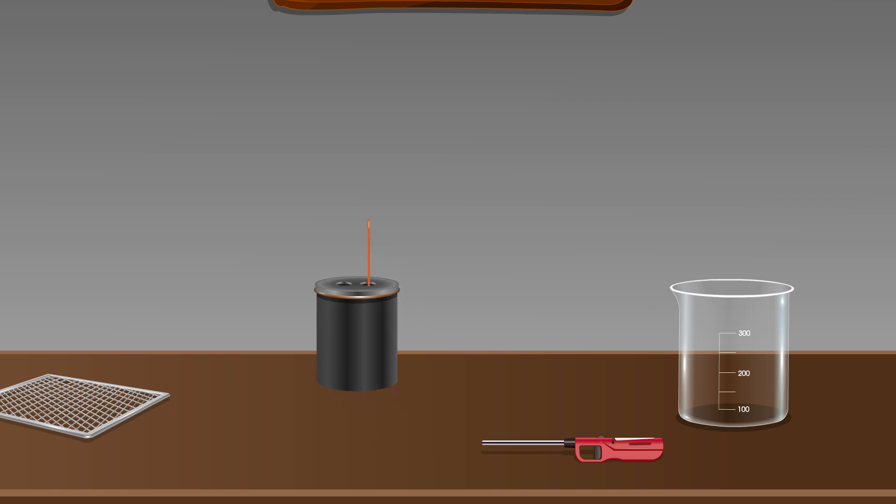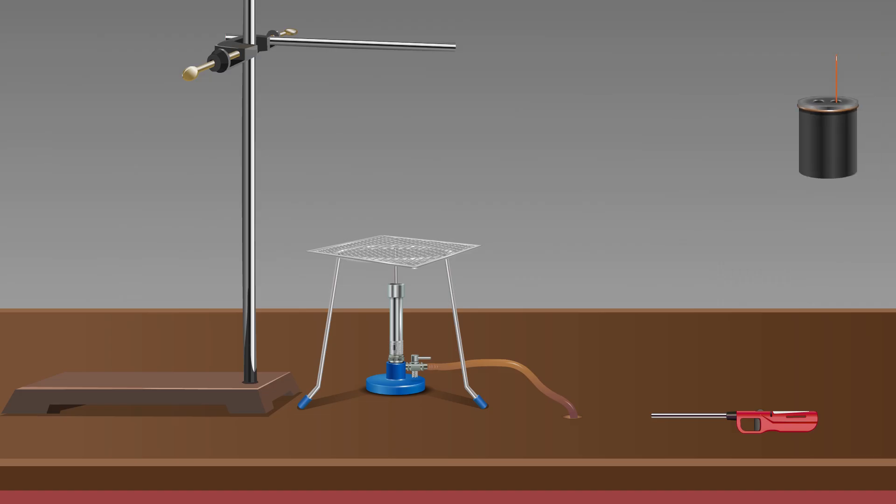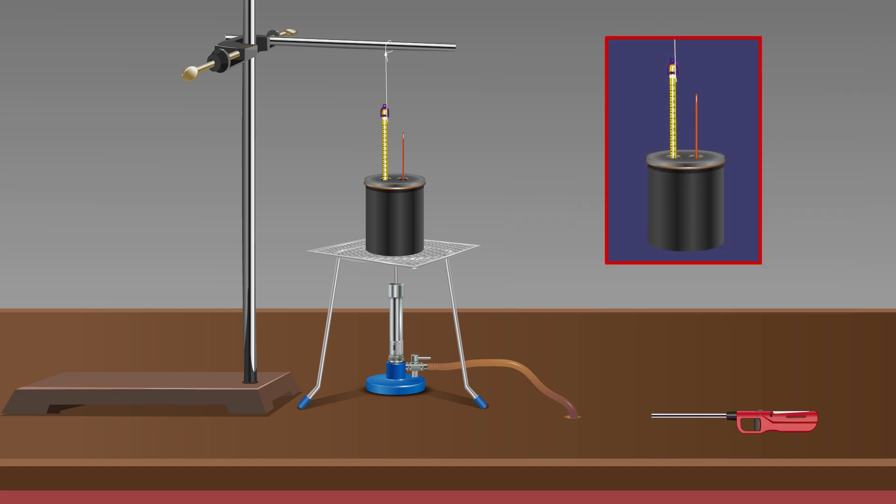Place the calorimeter over the wire gauze on tripod stand. Fix thermometer through one hole. Bulb of the thermometer should immerse in water.